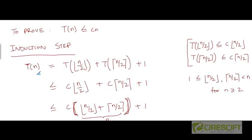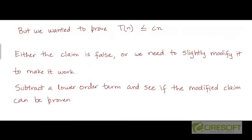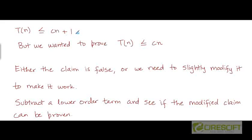So in the induction step we have now proven that T of n is less than or equal to C times n plus 1. But what did we set out to prove? We wanted to prove that T of n is less than or equal to C times n. We have ended up proving something slightly different — slightly looser than the stronger claim we wanted to prove. We need to prove something slightly stronger than what we have proven.